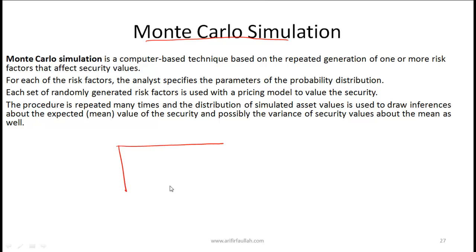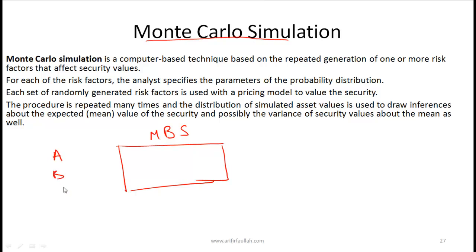To illustrate with an example: suppose you want to simulate the mean and variance of a complex mortgage-backed security with no simple pricing formula. You identify three risk factors A, B, and C — such as interest rates and number of housing starts. You input the possible probability distributions of these three risk factors into the computer.